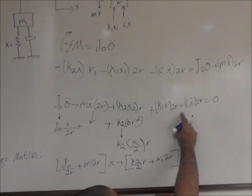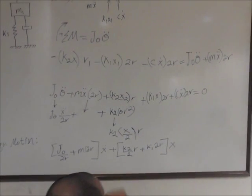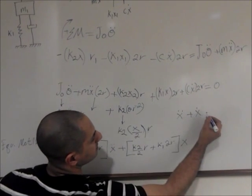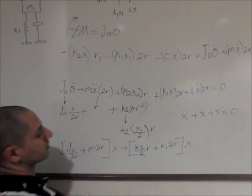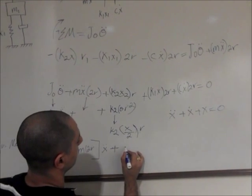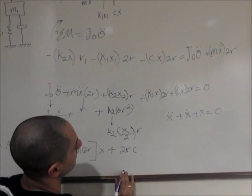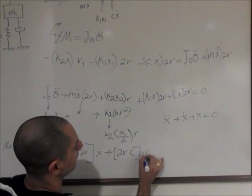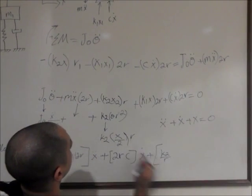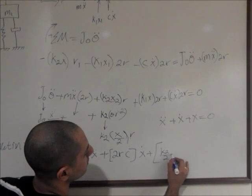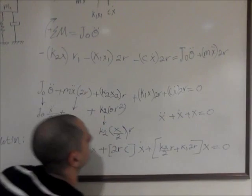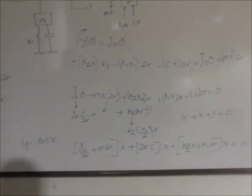And look at the damping. Since we're doing the equation of motion, it's supposed to be in terms of x double dot plus x dot plus the x equals 0. So let's take the damping, we have 2r c in terms of x dot, plus k2 over 2r plus k1 2r x equals 0. So there you go. That's your equation of motion, right over here.